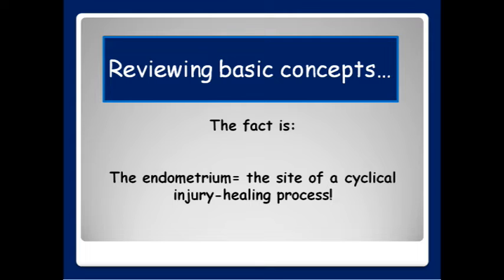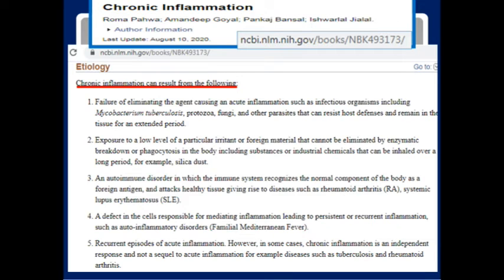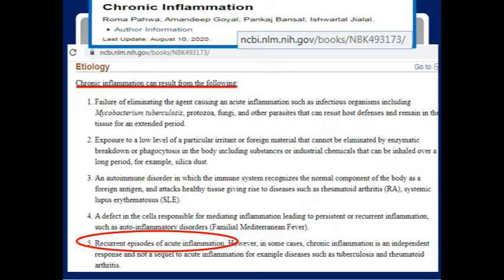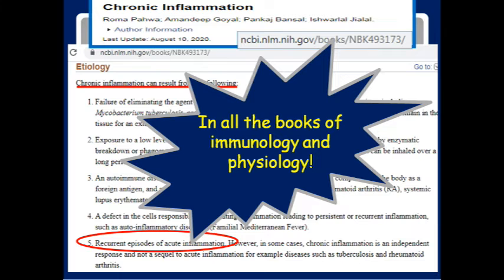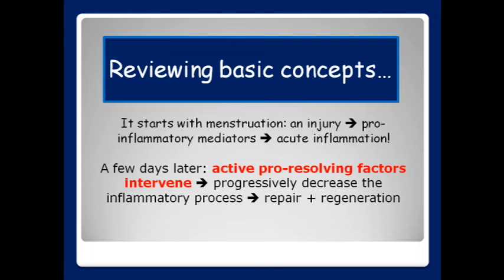The fact is, the endometrium is the site of a cyclical injury-healing process. However, repeated acute inflammation is one of the patterns of chronic inflammation — chronic inflammation can result from recurrent episodes of acute inflammation. This is in all the books of immunology and physiology. So there is already a chronic inflammation in physiological endometrium: it starts with menstruation, a sort of an injury, leading to release of pro-inflammatory mediators, causing acute inflammation. A few days later, active pro-resolving factors intervene, leading to a progressively decreased inflammatory process, allowing repair and regeneration.